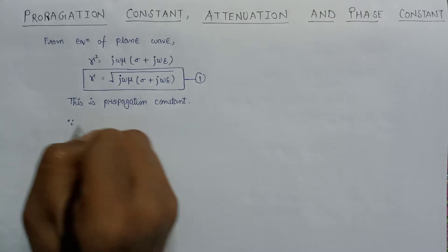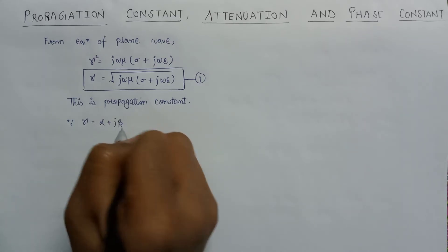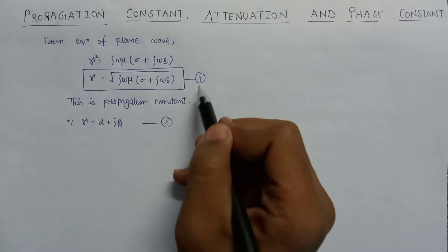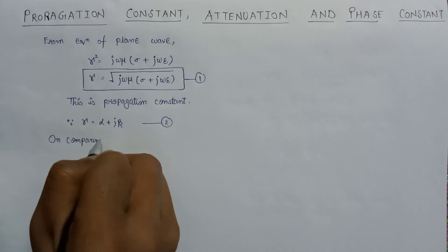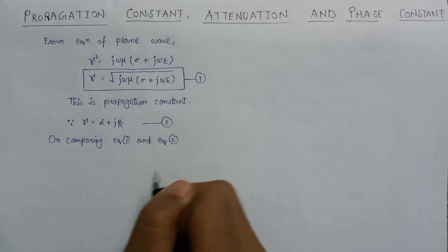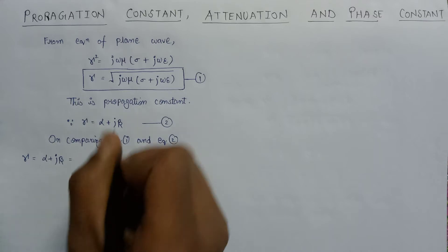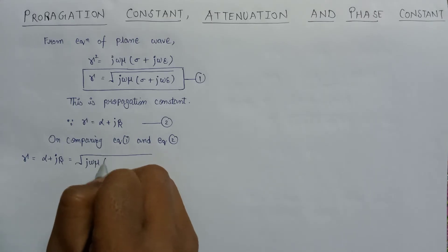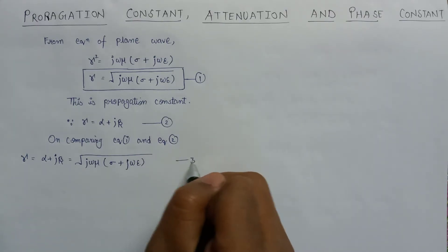We also know that the propagation constant in terms of attenuation and phase constant can be represented as alpha plus j beta — let me give it as equation number two. On comparing equation number one and equation number two, we can write gamma equals alpha plus j beta, which is also equal to the square root of j omega mu times sigma plus j omega epsilon. This is equation number three.